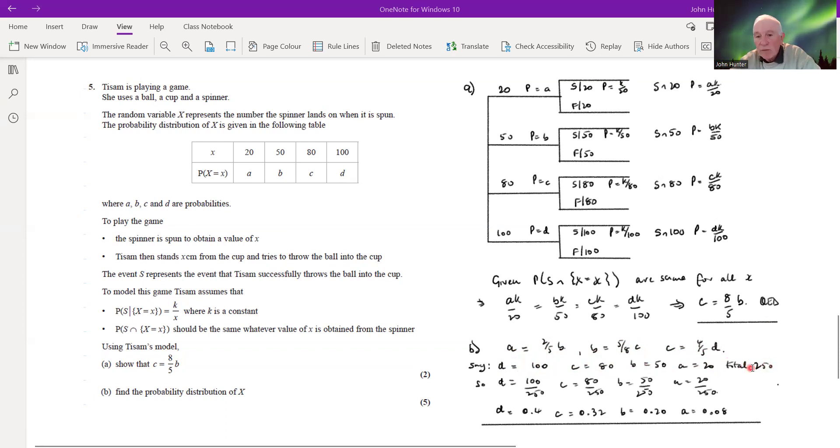Well, of course we actually want it to add up to one, don't we? But no matter, because now if we just divide all these figures by 250, then they will add up to one. Right, so that's going to give us d equals 100/250ths, 80/250ths, b is 50/250ths, and a is 20/250ths. So as a decimal, then a equals 0.08, 0.20, 0.32 for c, and 0.4 for d.